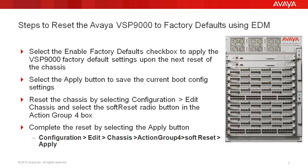Then we'll select the Apply button to save the current Boot Config settings. We'll reset the chassis by selecting Config Edit Chassis and then select the Soft Reset button in the Action Group 4 box. Finally, we'll complete the reset by selecting the Apply button. The chassis will restart with factory default settings once the reset completes.